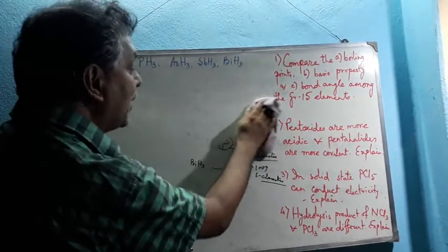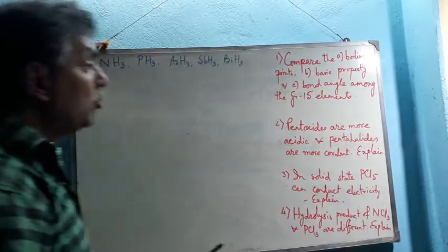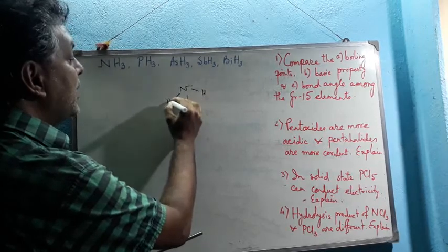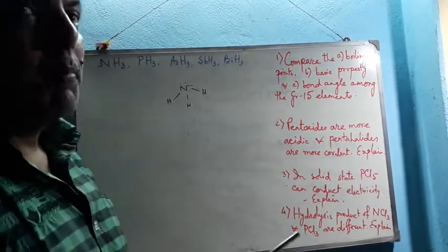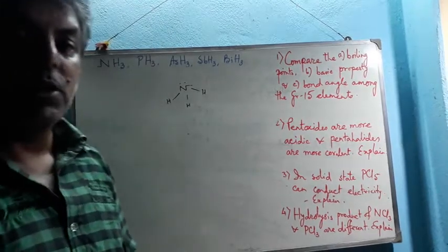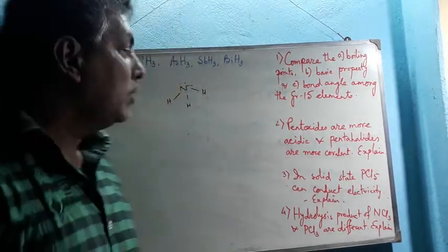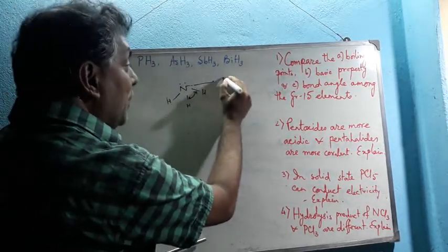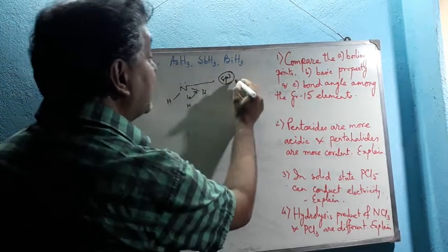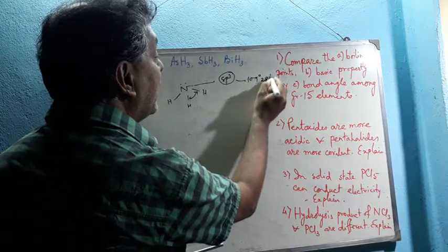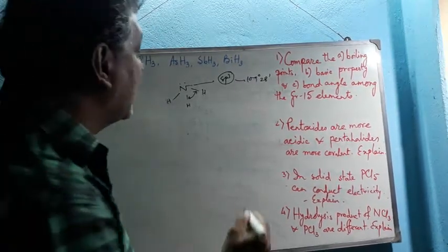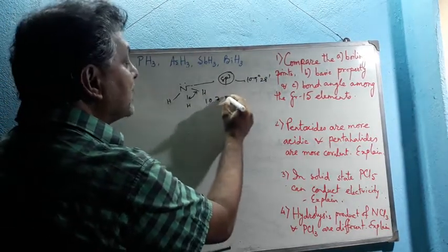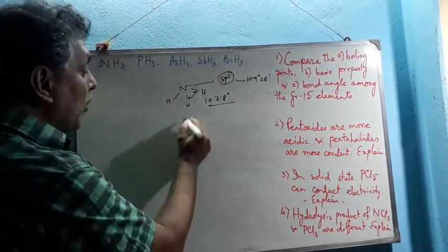Now we explain part C: bond angles among Group 15 hydrides. In ammonia, proper sp3 hybridization takes place due to the small size of nitrogen. The lone pair is located above the nitrogen atom, so lone pair–bond pair repulsion is high. The bond angle should ideally be 109°28' for sp3 hybridization, but due to lone pair repulsion, the bond angle becomes slightly smaller, approximately 107.8°.